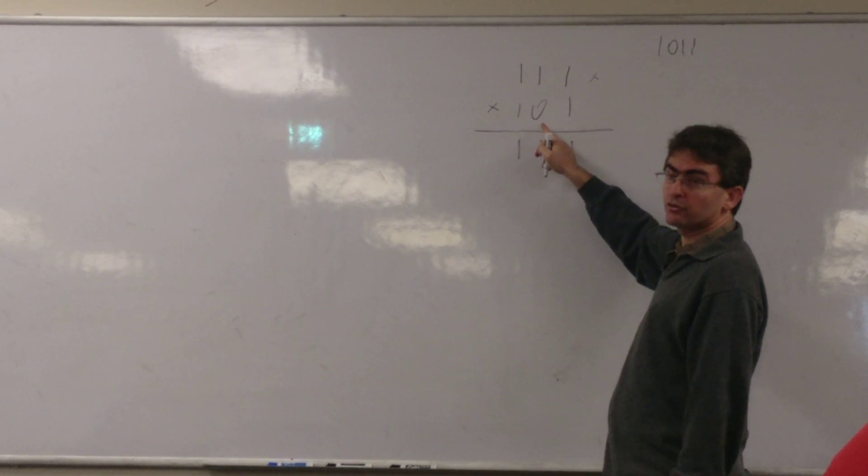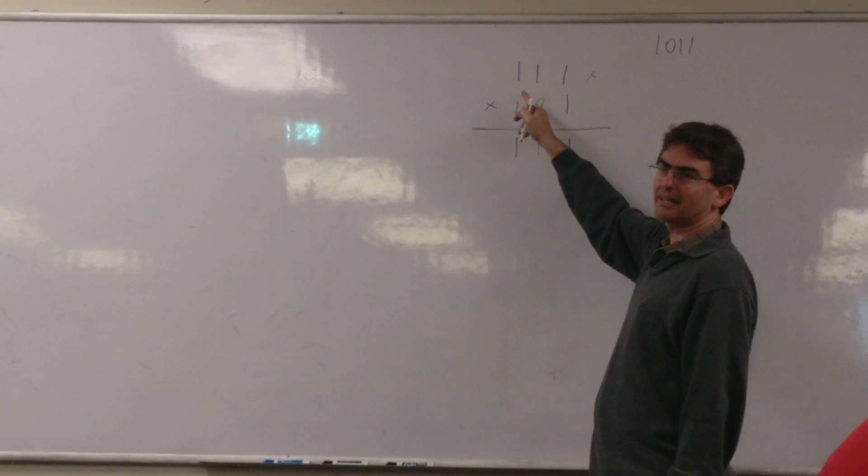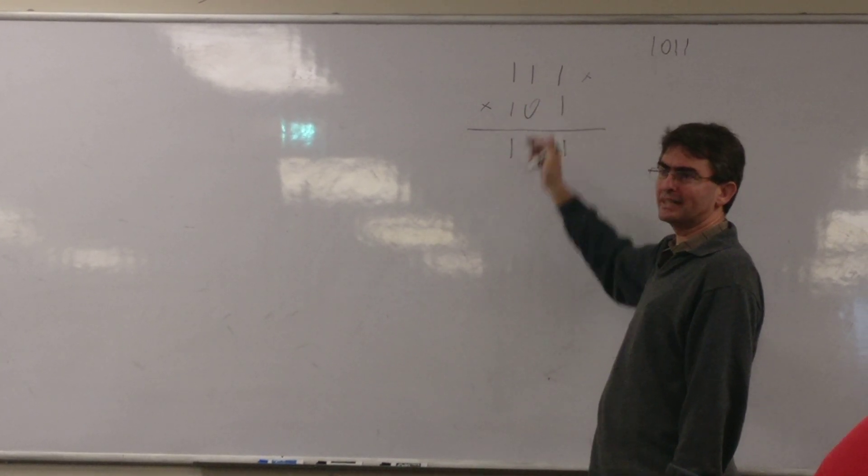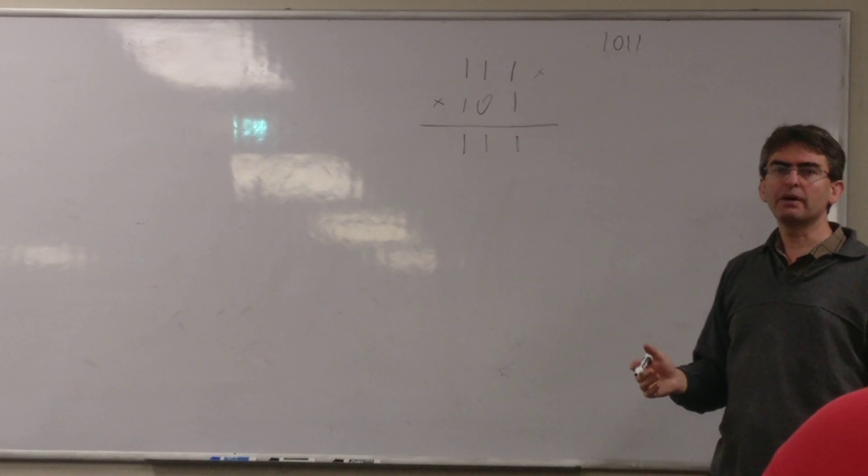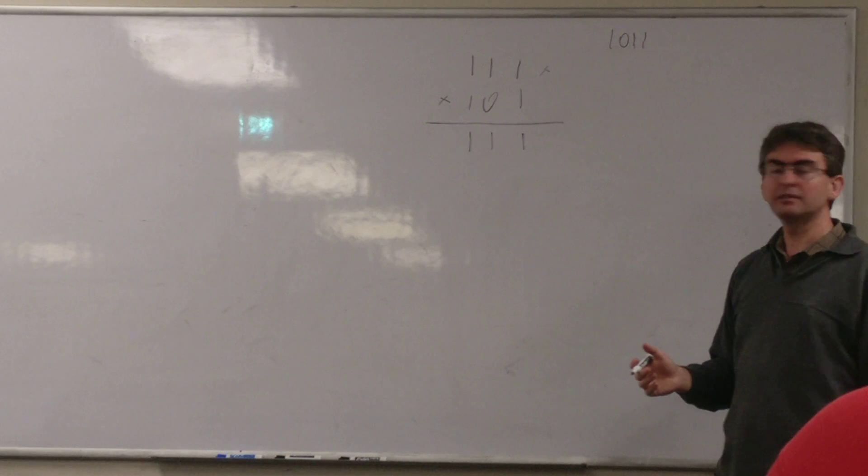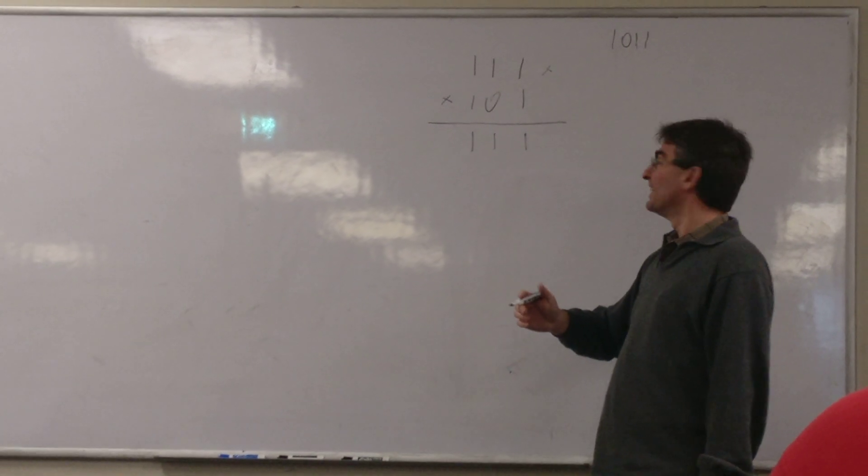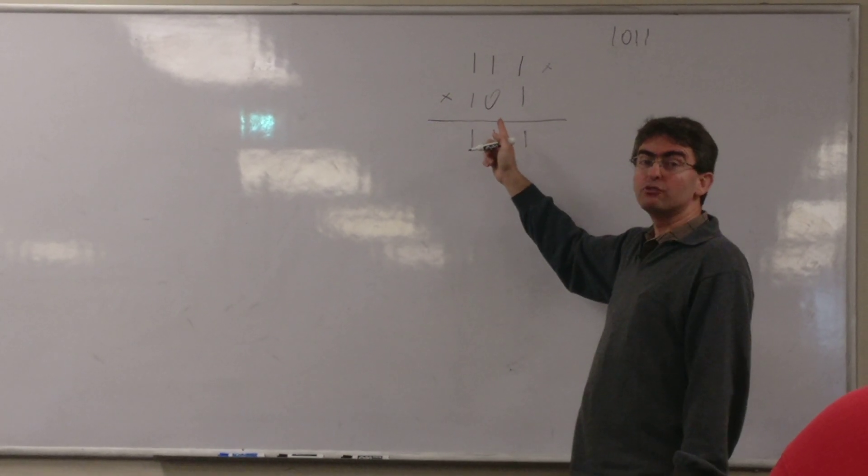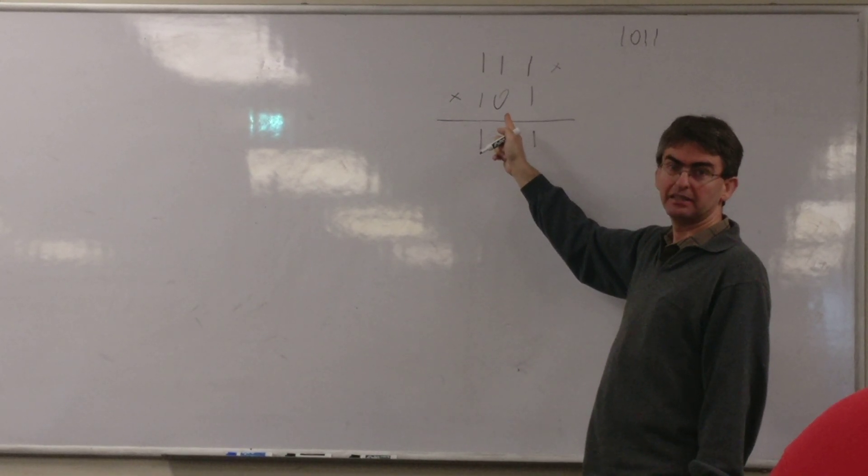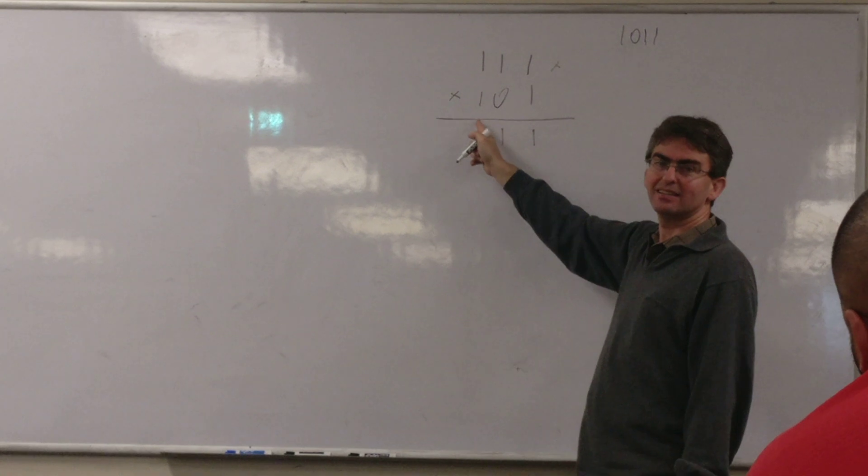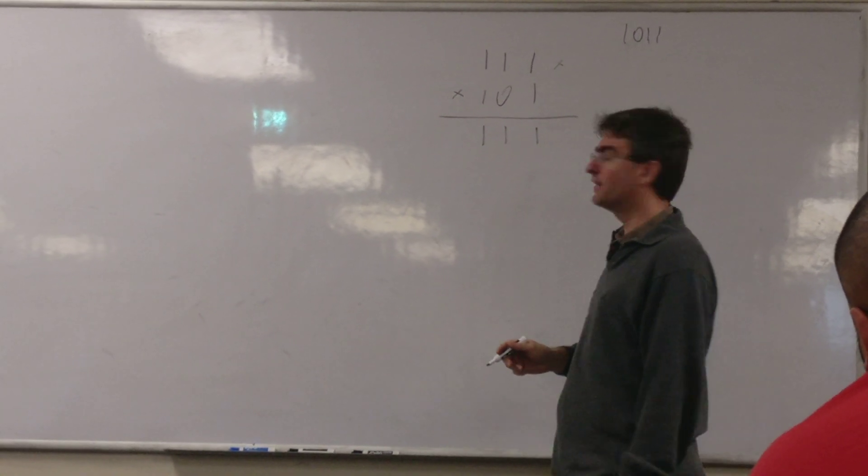Then we have to multiply zero times x squared plus x plus 1. That's zero. Typically you don't do anything. However in this algorithm we are going to keep track of what would have happened if we had had a 1 here because we are going to use the result in the next value.